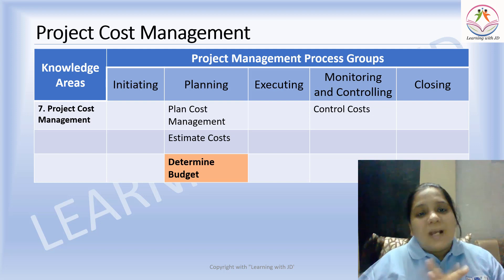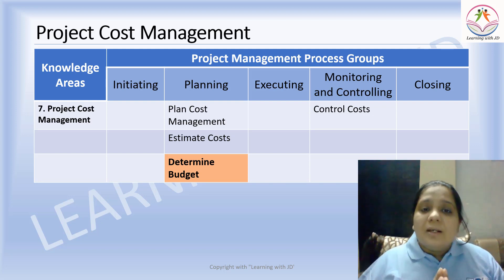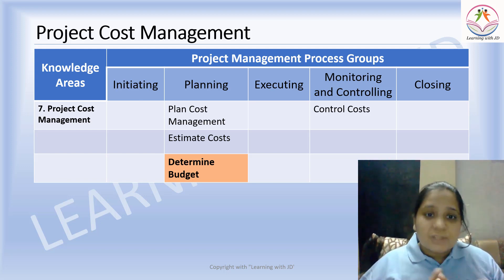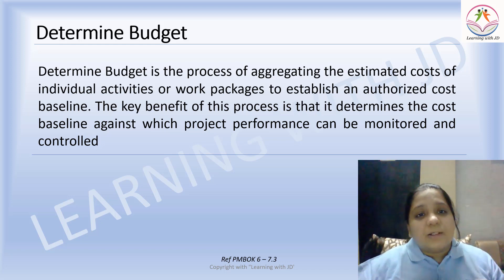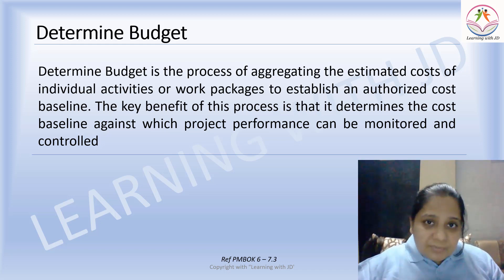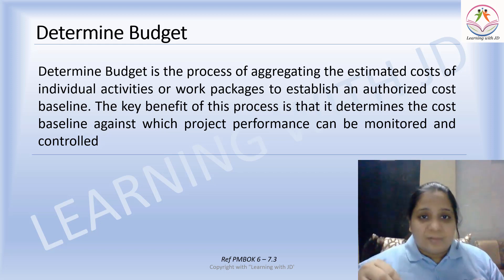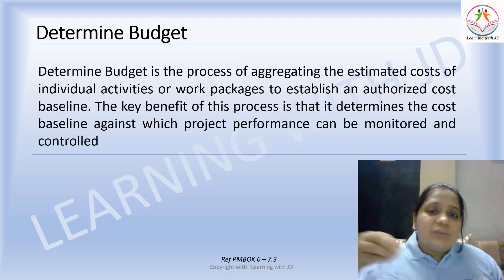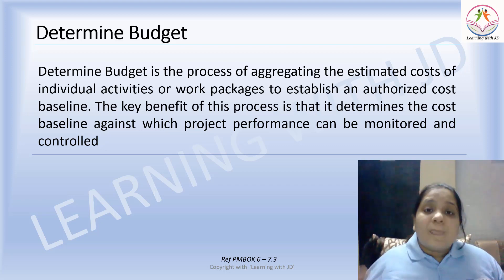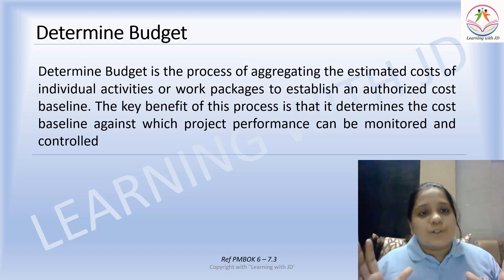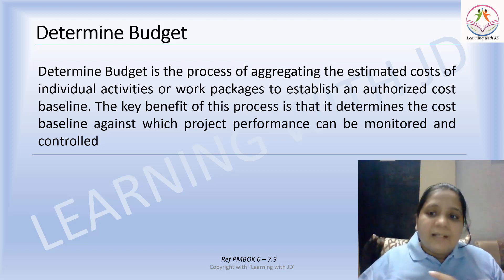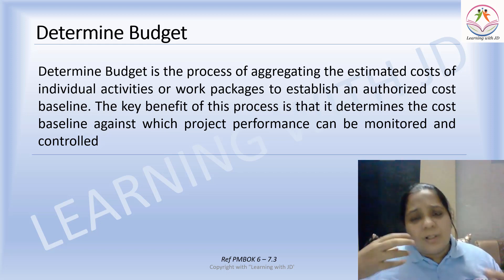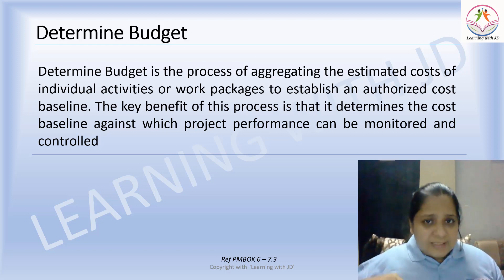Planning a cost and estimating the cost are part of the planning process group, and determining the budget is also part of the planning process group. Determining the budget is the process of aggregating the estimated costs of individual activities. In the previous video we estimated cost at an activity level, not at a project level. Now we have to aggregate all these costs at an overall level and add certain more considerations to determine our budget.